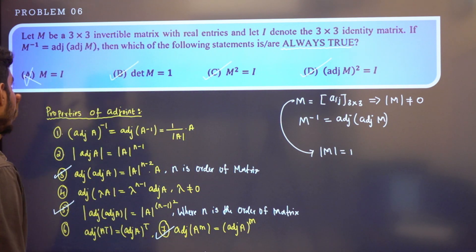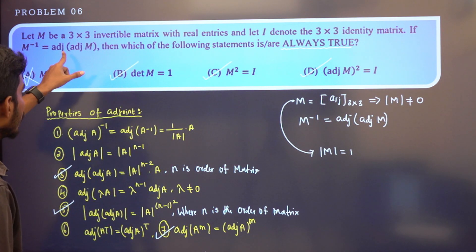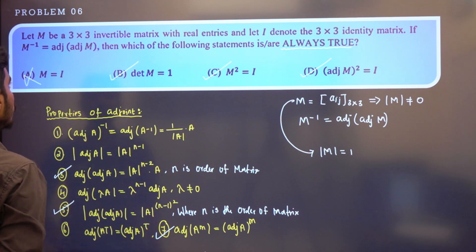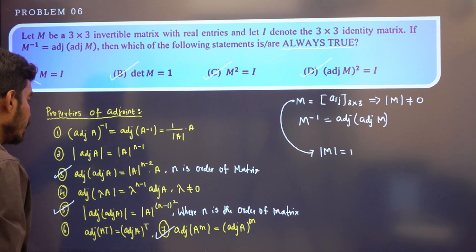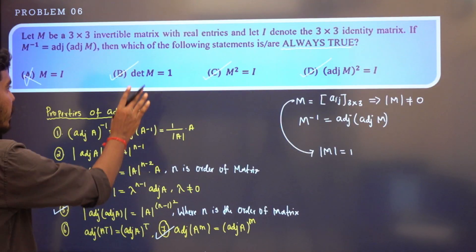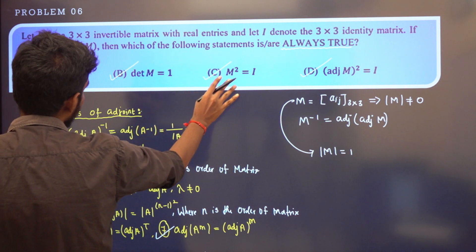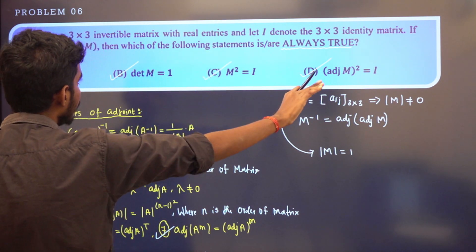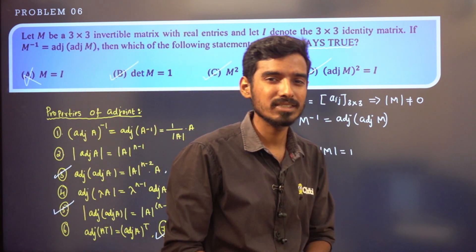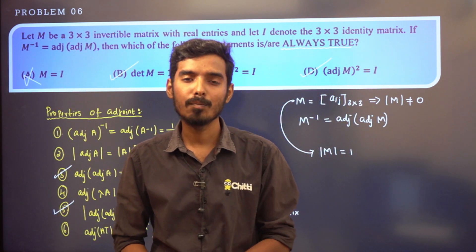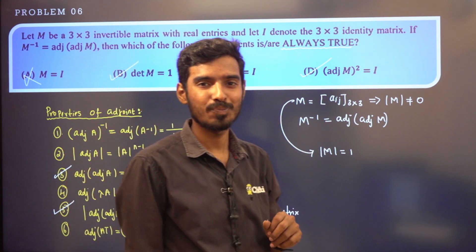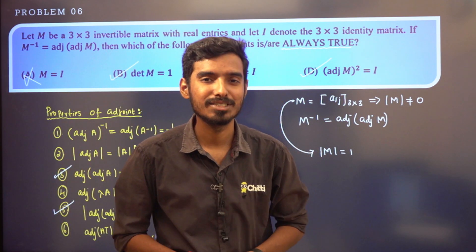So to summarize: since M inverse equals adjoint of adjoint of M, taking determinant on both sides and applying properties gives det(M)^5 = 1, so det(M) = 1. This is true. M² = I is also true. Option A (M = I) is not always true. So options B, C, D are true. This is a very easy problem based on properties of adjoint and determinant. Thank you, all the best.